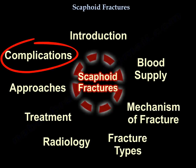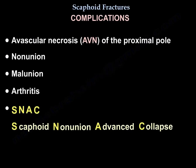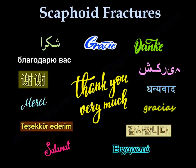Complications of scaphoid fracture include: AVN of the proximal pole, nonunion, malunion, arthritis, and SNAC — Scaphoid Nonunion Advanced Collapse. Thank you very much. I hope that was helpful.